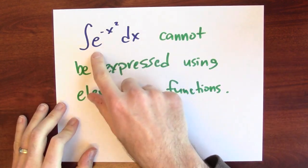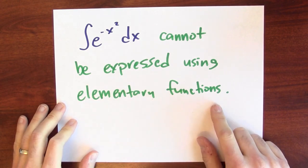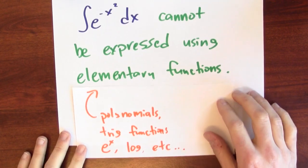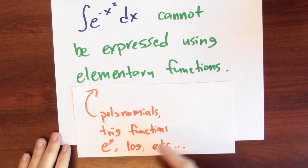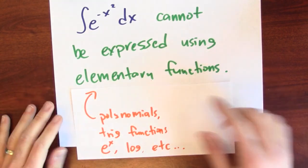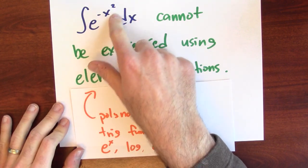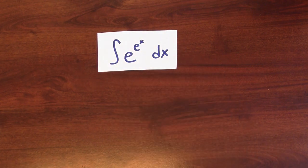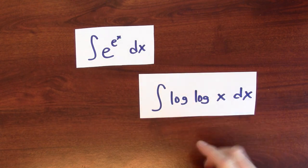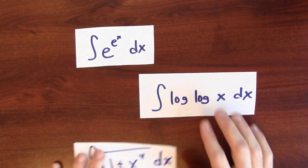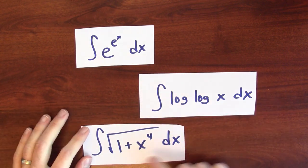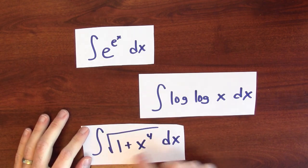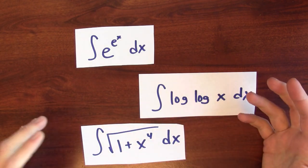In fact, an anti-derivative for e to the negative x squared cannot be expressed using elementary functions — things like polynomials, trig functions, e to the x, log, things like that. This is really a surprising result. There is a function whose derivative is e to the negative x squared, but it's not a function that I can write down using the functions I already have at hand. And maybe e to the negative x squared is just an isolated terrible example — but I can't anti-differentiate e to the e to the x, I can't anti-differentiate log(log x), and I can't even anti-differentiate the very reasonable-looking algebraic function the square root of 1 plus x to the 4th, all using elementary functions.